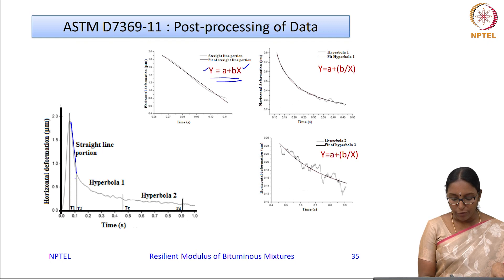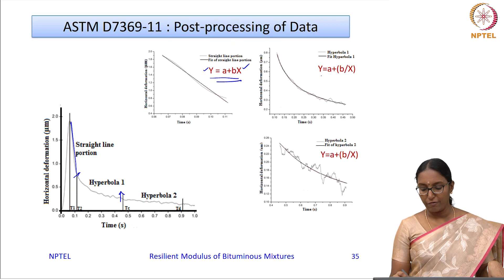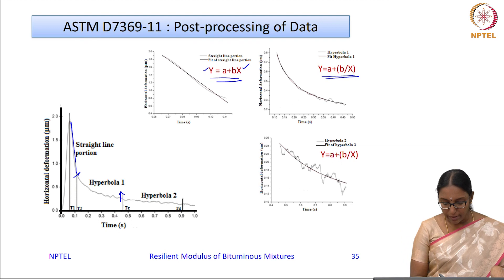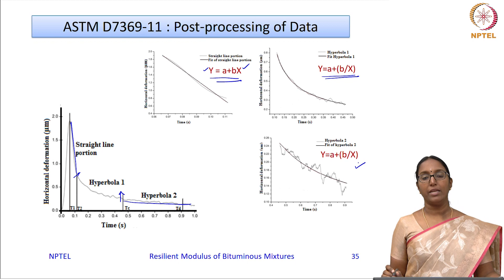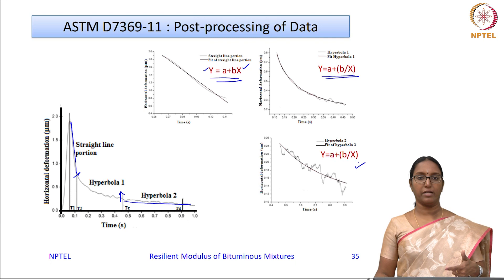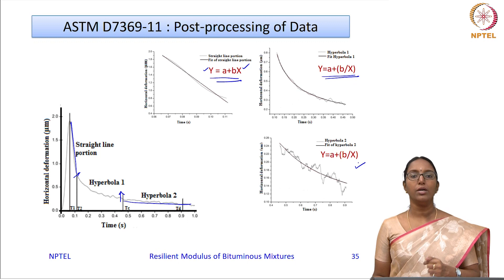For the second region, a hyperbola of the form y = a + b/x is fitted, where a and b are regression coefficients. For the third region, another hyperbola y = a + b/x is also fitted. This entire procedure is done to identify two key variables: the instantaneous recovery and the total recovery, which are used to determine the resilient modulus and Poisson's ratio.